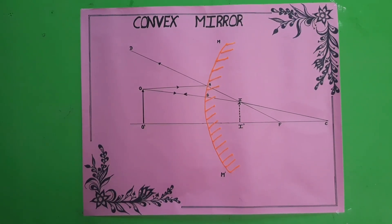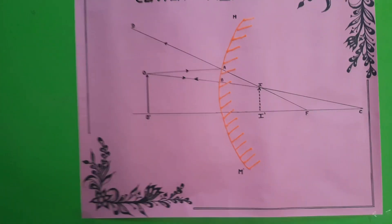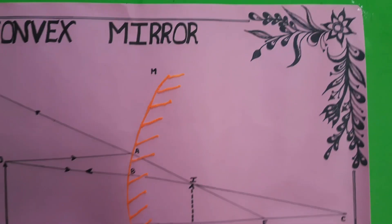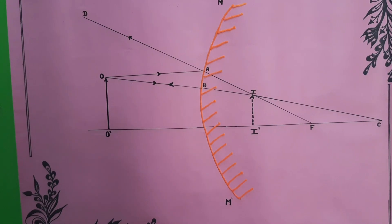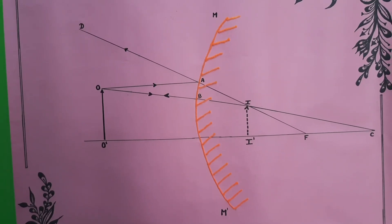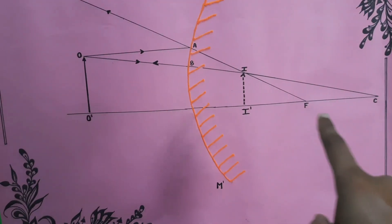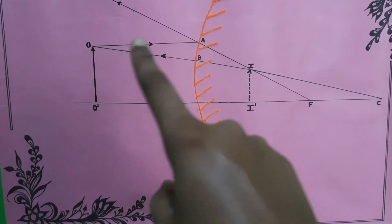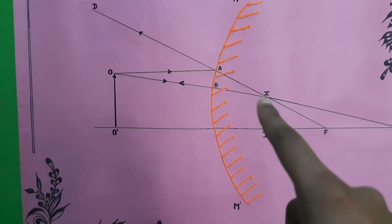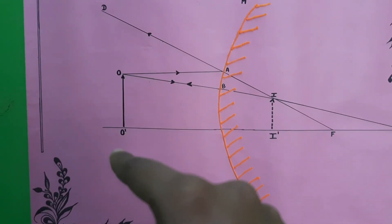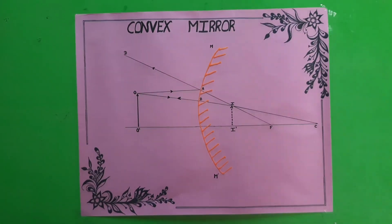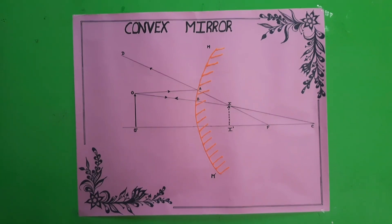Convex mirror — in 9th standard physics, most lessons have equations shown in the chart because we also have a working model. In this video, we use thread and mirror. We use pencil and thread to differentiate. The principal axis is the main line. The intersecting point is marked. OO' is the object. This is a virtual image — the mirror is on the back side. This is a virtual erect image. The object appears smaller. This is image formation in a convex mirror.